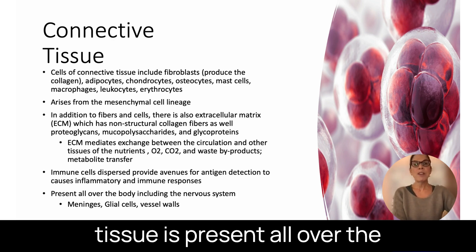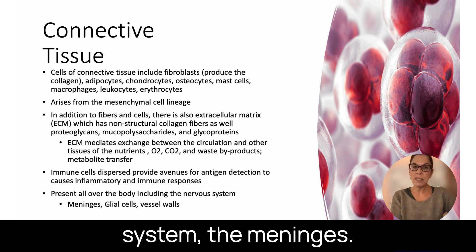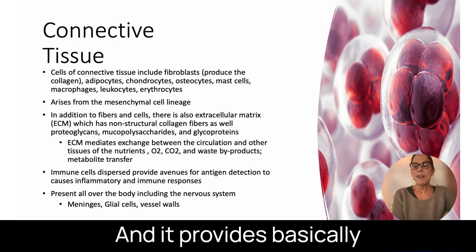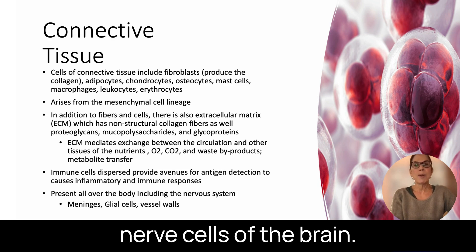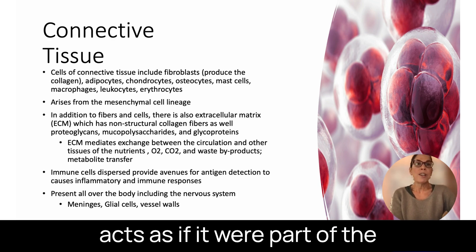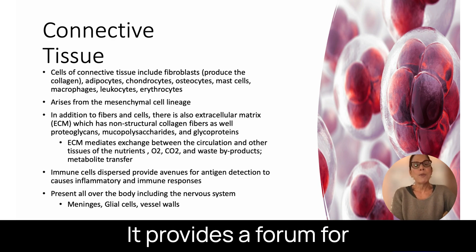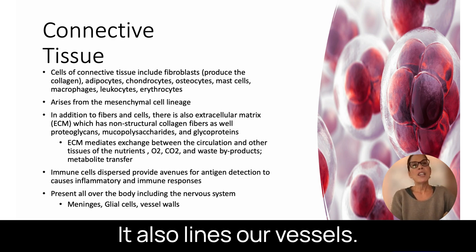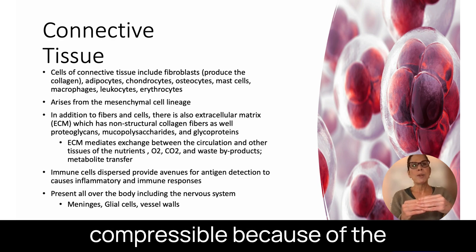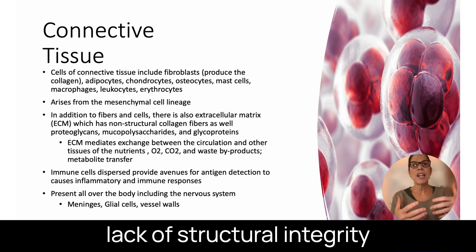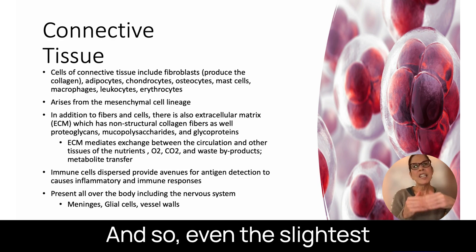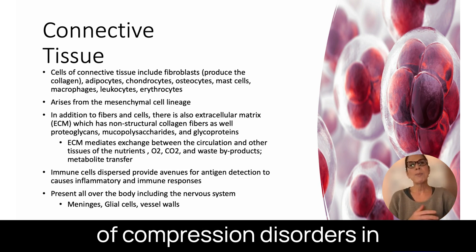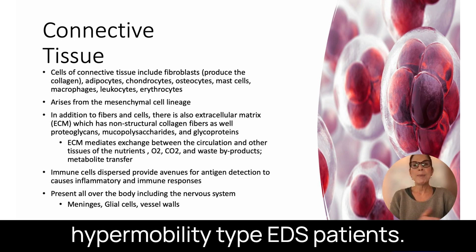Connective tissue is present all over the body, including the nervous system — the meninges. The dura is a dense layer of connective tissue. The glial cells make up 90% of the brain and provide a matrix for the other nerve cells, almost acting as the connective tissue of the brain, providing a forum for communication and function of those nerve cells. Connective tissue also lines our vessels, which become very compressible due to lack of structural integrity, and even the slightest mechanical pressure can cause compression. That's why we see a lot of compression disorders in hypermobility type EDS patients.